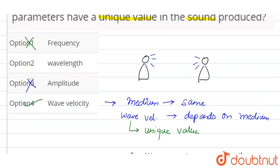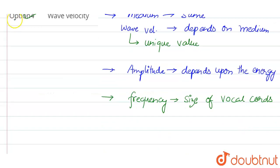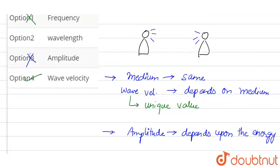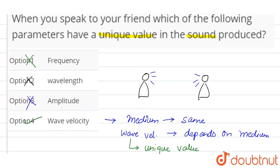Now let us check wavelength. As we know, wavelength is inversely proportional to the frequency for constant wave velocity. So as frequency might change, wavelength will also change. So option number two is also wrong.